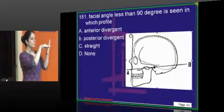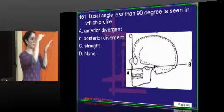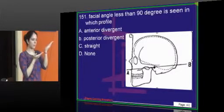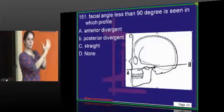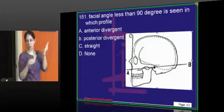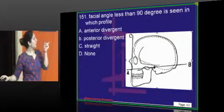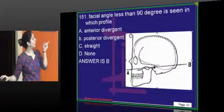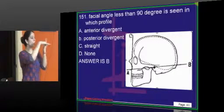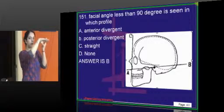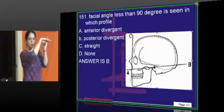When the face is posteriorly divergent, that means your face is like this — this part is your chin, this part is your upper face. When it is posteriorly divergent and less than 90 degrees, it looks like that. We are talking about this lower angle over here, not the upper angle.